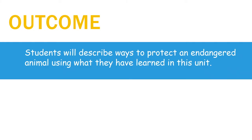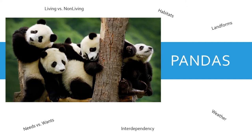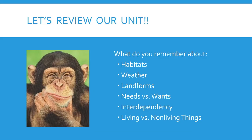The outcome this week is that students will describe ways to protect an endangered animal using what they have learned in this unit. When we talk about the different parts of this unit, think about the panda bears so we can relate them to all the things we've learned. Let's review: habitats, weather, landforms, needs versus wants, interdependency, and living versus non-living things.